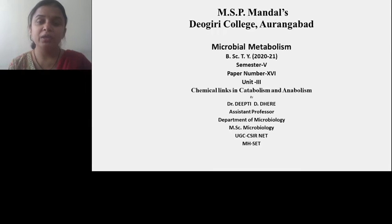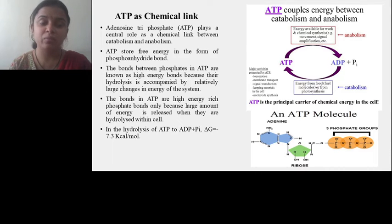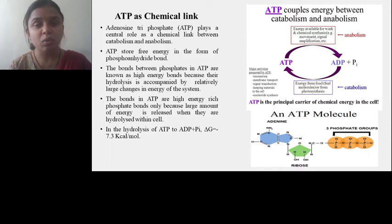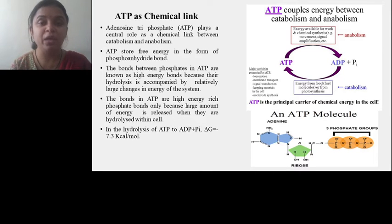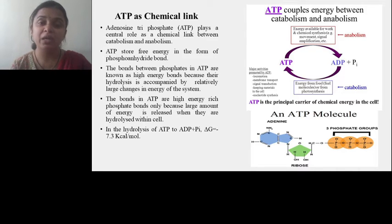Hello everyone. I am Dr. Gipti Dehri and today I am going to discuss the chemical link in catabolism and anabolism. Up till now we have discussed the concept of catabolism and anabolism. Catabolism is the process in which energy is generated in the form of ATP by the breakdown of complex molecules into simple units, while anabolism is the process in which small units are utilized for the biosynthesis of complex molecules and ATP is utilized for new bond formation. In this lecture we are going to discuss the actual role of ATP and how it links the process of catabolism and anabolism.